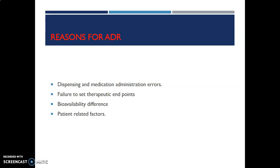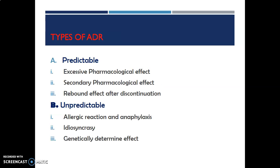Reasons for ADR: there are different reasons. First is dispensing and medication administration error. Second is failure to set the therapeutic end points. Third is biological difference, and fourth is patient-related factors. Types of ADR: first type is predictable ADR, which includes excessive pharmacological effect, secondary pharmacological effect, and rebound effect after discontinuation. The second type is unpredictable, which includes allergic reaction or anaphylaxis.